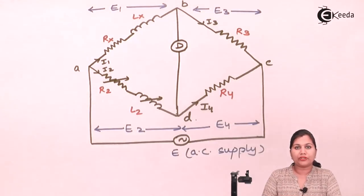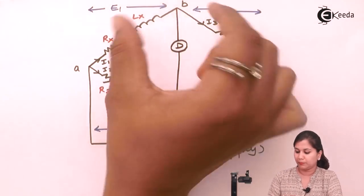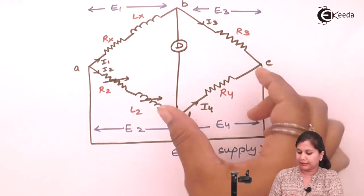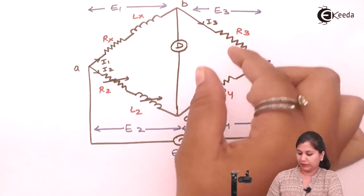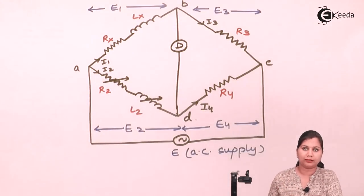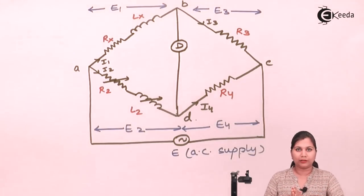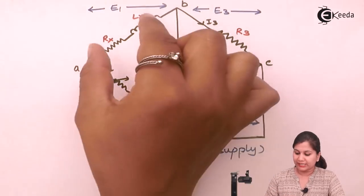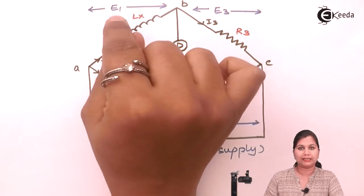This is the bridge circuit for the Maxwell inductance bridge. You can see we are having four arms: AB, BC, CD, and DA. In these four arms, the impedances can be a combination of resistance, inductance, and capacitance — any series or parallel combination. Arm AB is a series combination of resistance and inductance.